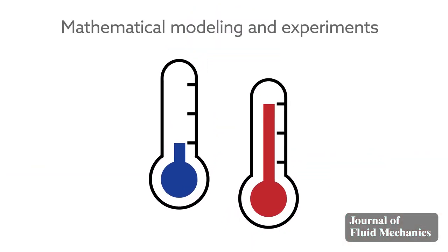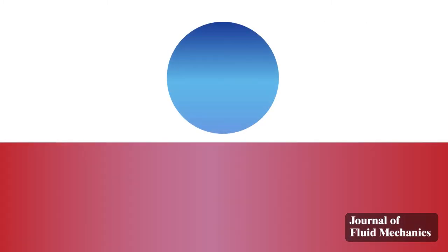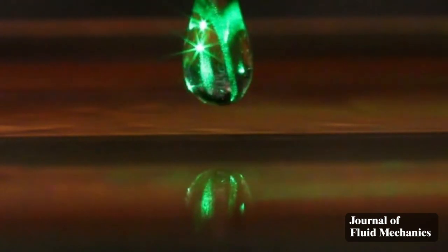A combination of mathematical modeling and experiments provided a closer look at the crucial role played by temperature. The temperature difference between a cold drop and a hot bath creates flows both in the drop and the air cushion that increase the pressure in the cushion.